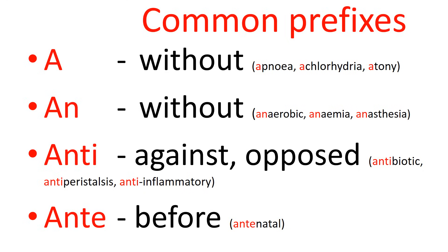Or anemic. The 'emic' part — A-E-M-I-C — is to do with the blood. So if someone is anemic, technically it means they have no blood, but in practice it means they have lowered concentrations of haemoglobin in their blood and therefore a reduced oxygen-carrying capacity. Technically anaemia means without blood.